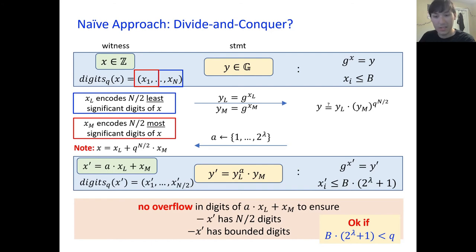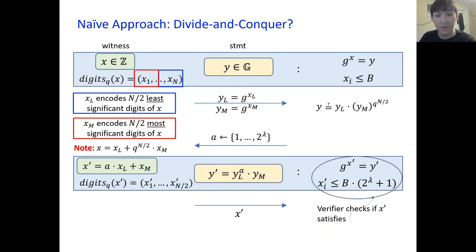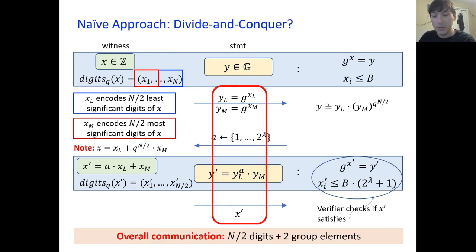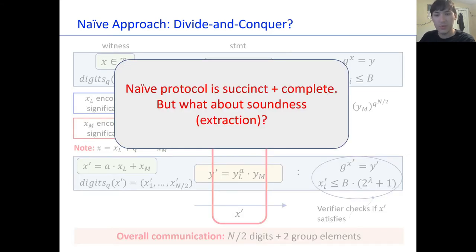At this point we're done — we just send X prime, and the verifier completes its final checks and accepts or rejects. This protocol has n over 2 digits plus 2 group elements of communication, which we call succinct. So this protocol is both succinct and complete, but what about soundness and extraction? This is where the bug shows up.